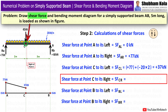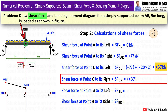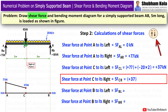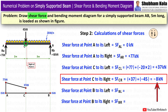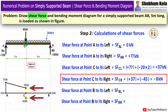Shear force at point C to its right: I carry forward 37kN. Moving to the right of C, there is a 45kN point load acting downward, which is negative. So SF at C right equals 37 − 45 equals −8kN. Since this value is negative, I mark this point below the reference line of 0kN and connect the two points with a vertical line.